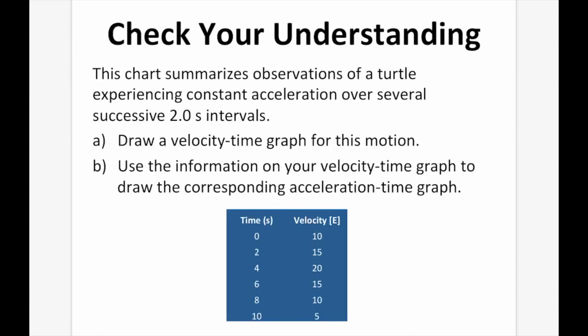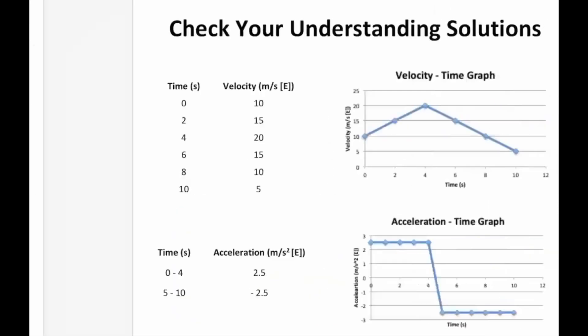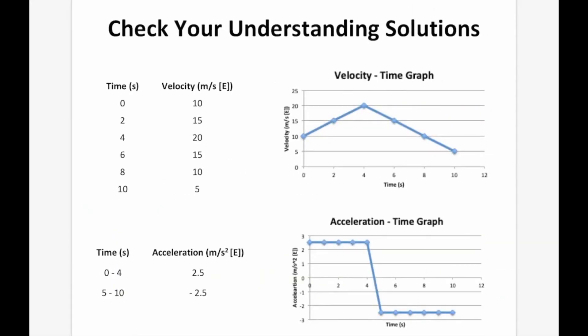Check your understanding: a chart shows a turtle experiencing constant acceleration over several two-second intervals. (a) Draw a velocity-time graph for this motion. (b) Use the VT graph to draw the corresponding acceleration-time graph. Once plotted, the VT graph shows velocity increasing between times 0 and 4, then decreasing between times 4 and 10. The AT graph shows positive acceleration between 0 and 4 — matching the rising velocity — and negative acceleration between 4 and 10, matching the falling velocity.